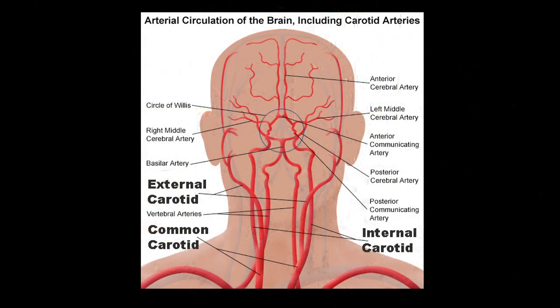Most people believe that it's a lack of flow that causes strokes and embolic events, but in fact it's the plaque that builds up in the carotid arteries, much like in the heart, and pieces of that plaque fly off and end in one of the terminal vessels in the brain that supply function and sensation to an arm or a leg.